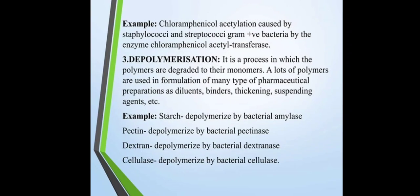Third is depolymerization. It is a process in which polymers are degraded to their monomers. A lot of polymers are used in the formation of many pharmaceutical preparations as diluents, binders, thickening or suspending agents, etc. For example: starch depolymerization by bacterial amylase; pectin depolymerization by bacterial pectinase; dextrin depolymerization by bacterial dextranase; and cellulose depolymerization by bacterial cellulase.